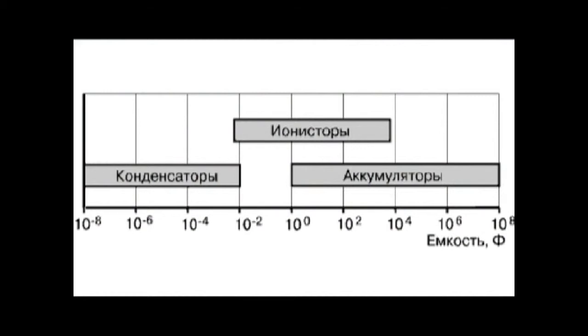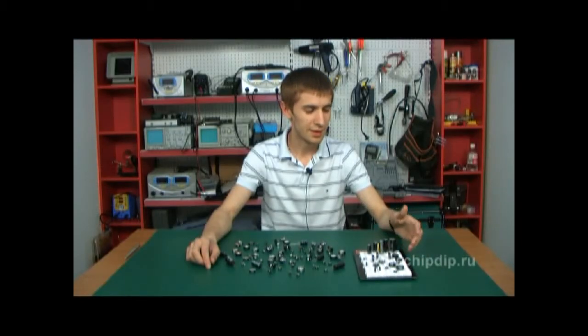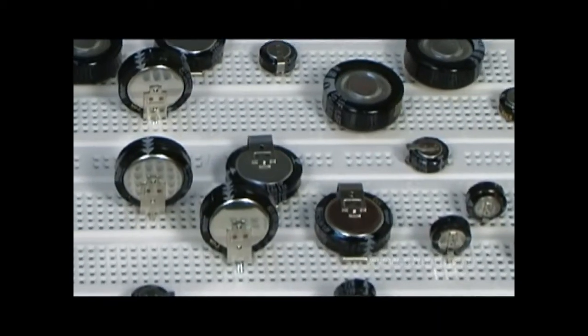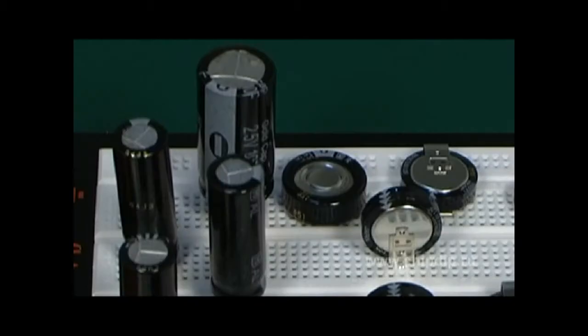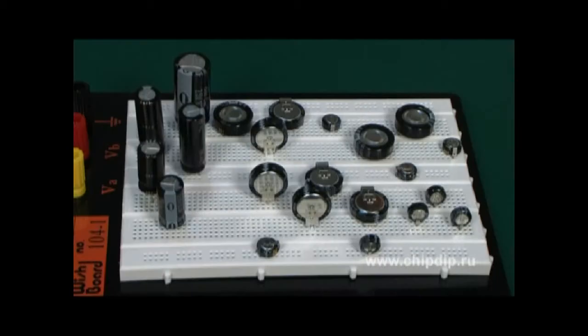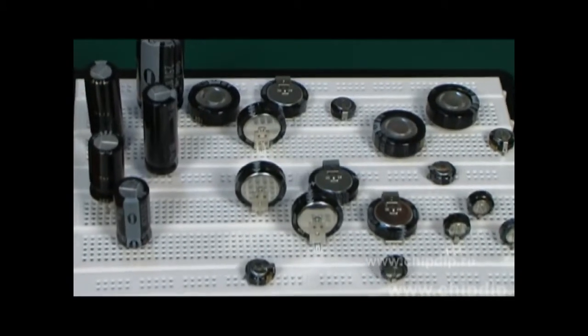Our range is represented by the ionisters manufactured by Panasonic in two series, HG and AL series with vertical and horizontal leads and with radial leads with capacity from 0.022 to 10F rated for the voltage from 2.5 to 5.5V.